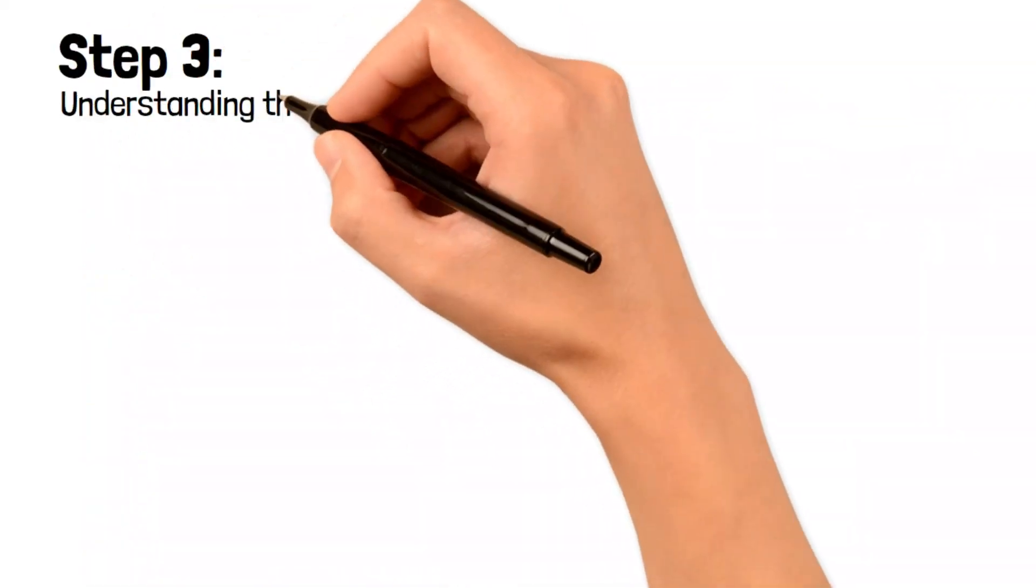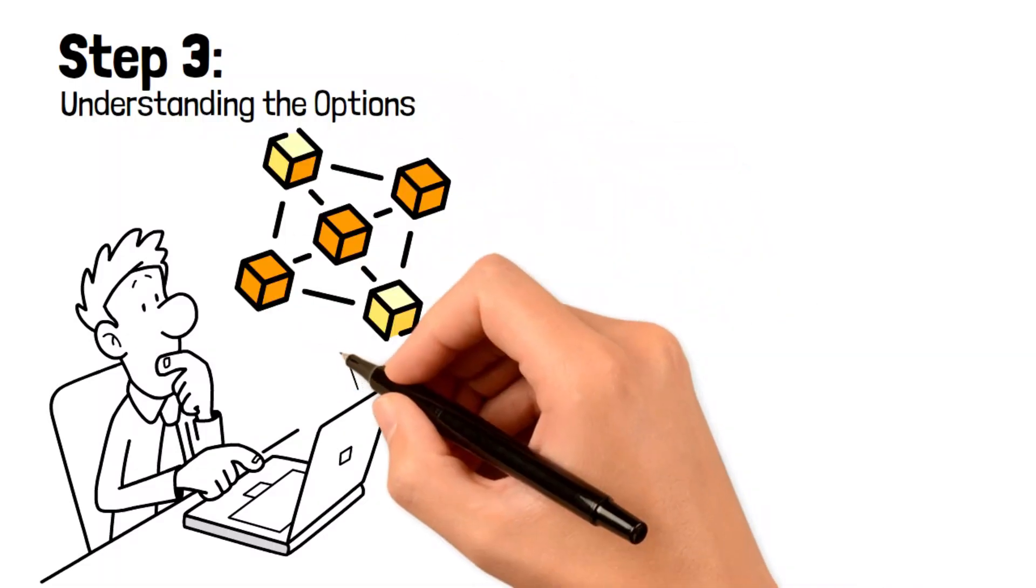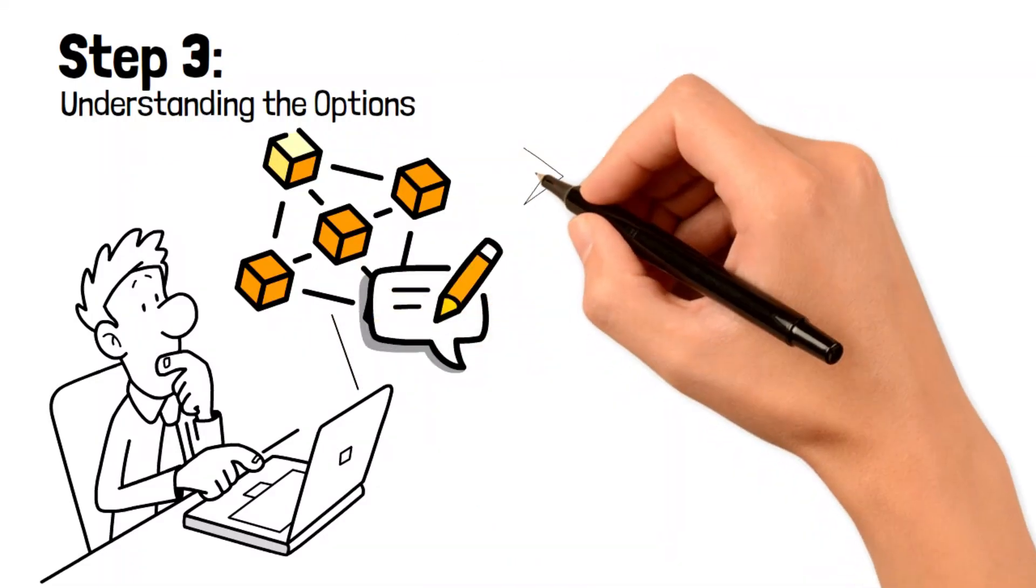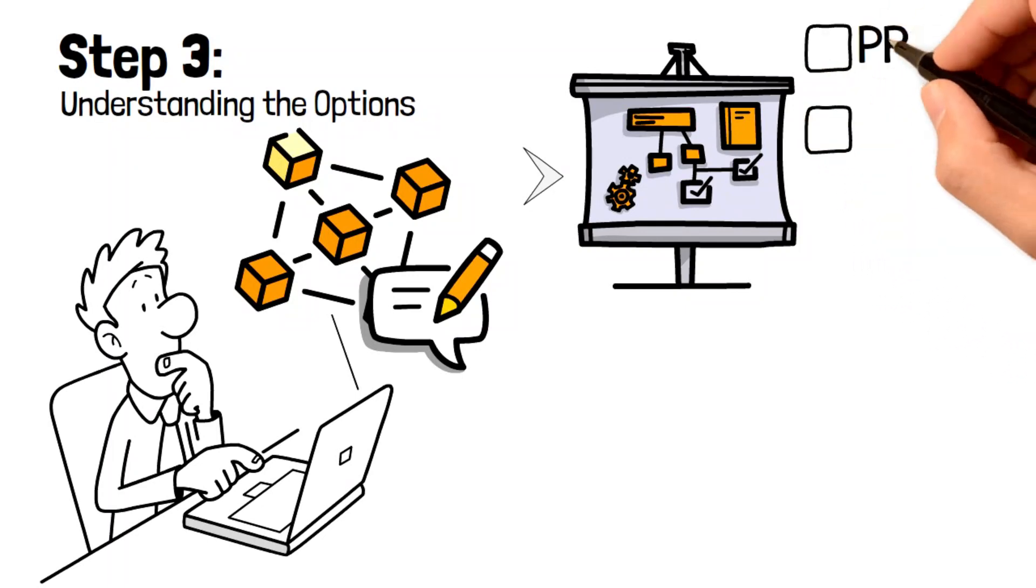Step Three: Understanding the options. When you're creating your coin, you'll need to design the architecture of your blockchain. This decision is crucial because not all blockchains allow public validation of transactions or running nodes.